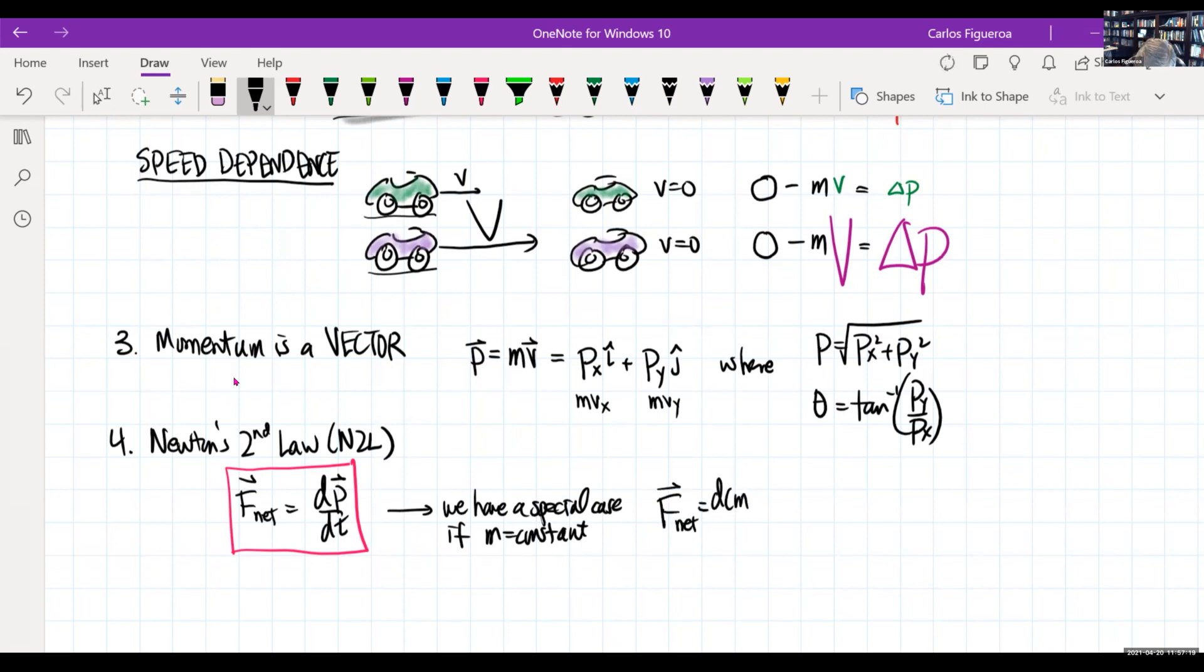So if I now use the chain rule, I get dm dt times the velocity plus m dv dt. And if I have a constant mass, then that term is zero. And then the derivative of the velocity gives me mass times acceleration. So it's a special case of Newton's second law.